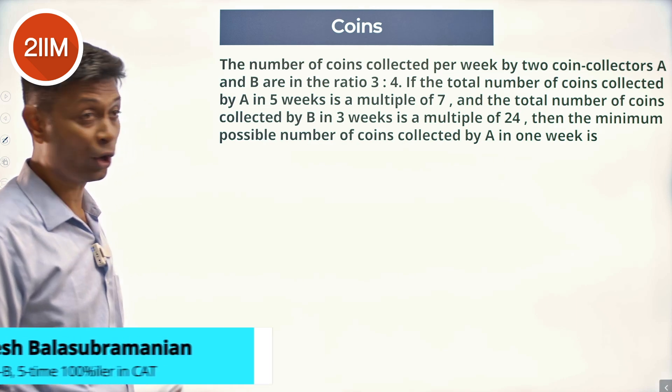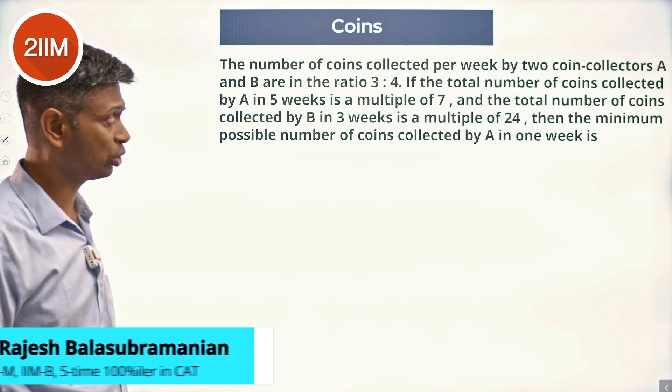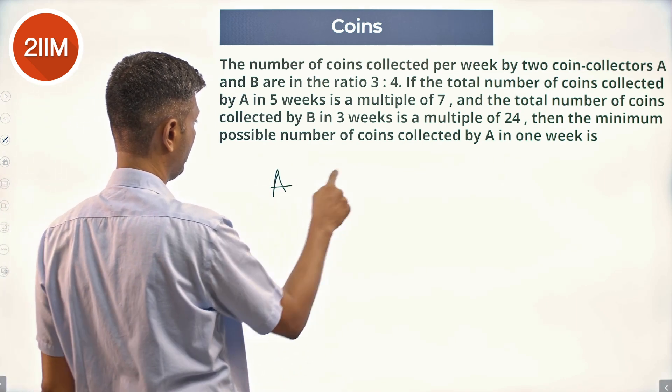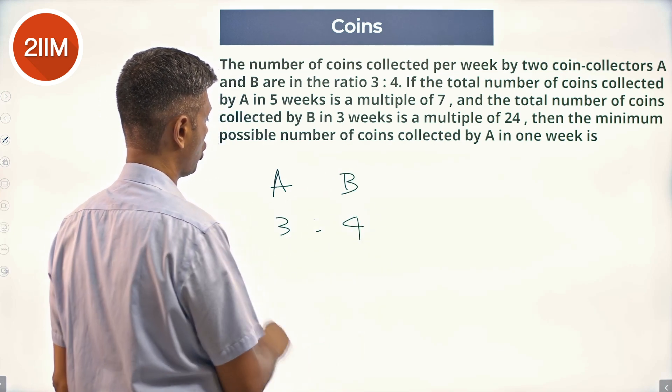The number of coins collected per week by two coin collectors A and B are in the ratio 3 is to 4. So A and B, 3 is to 4 coins.